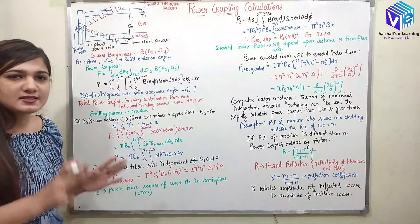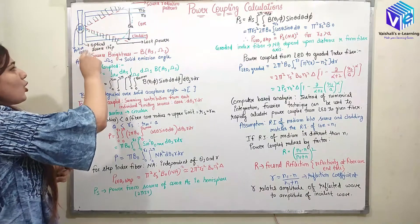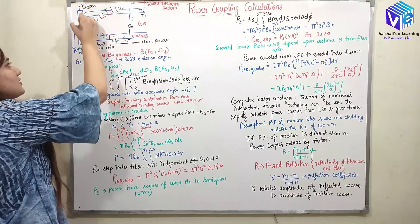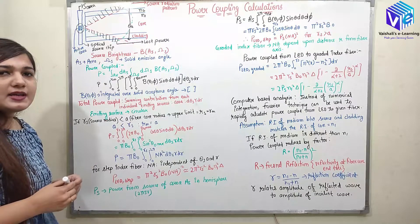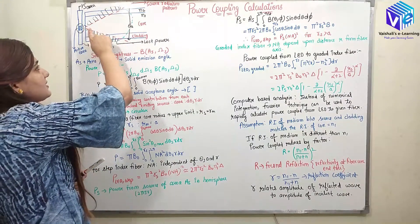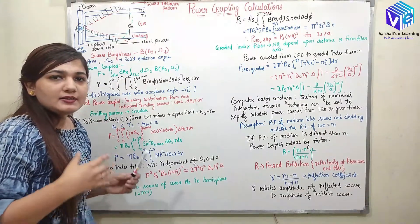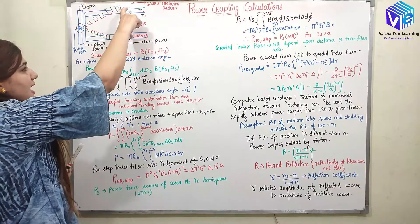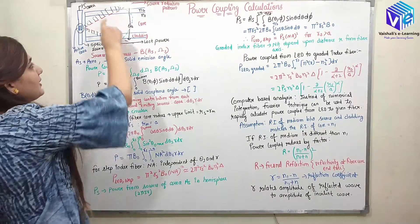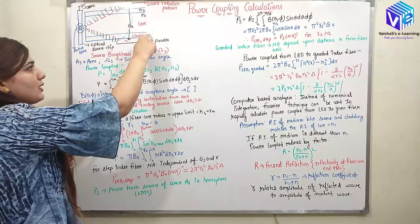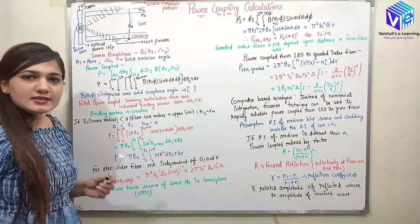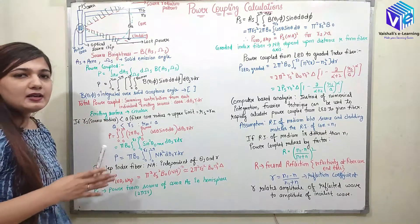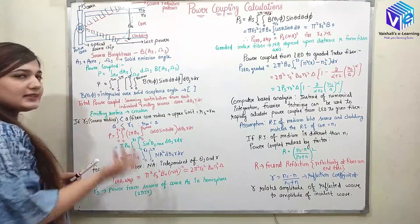Let's start our discussion. The basic scenario: we have an active area on the optical source chip. On the source we have an active area represented by a circle. From this active area we are generating some radiation — the green part represents the source radiation pattern. This blue part represents the fiber, which has a core with refractive index N1 and cladding with refractive index N2. The fiber has an acceptance angle represented by theta_a.